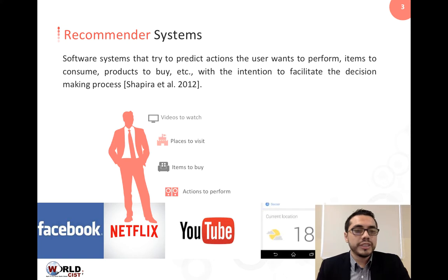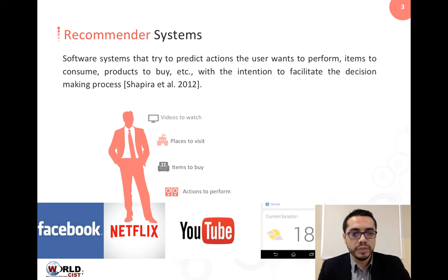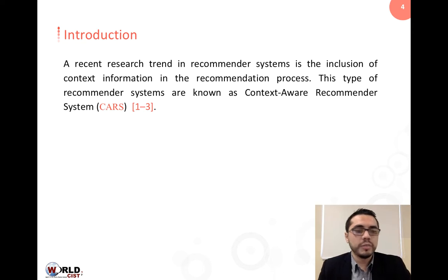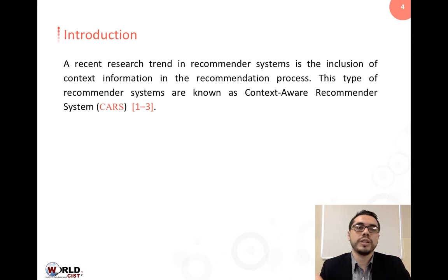Recommender systems are software systems that try to predict the actions the user wants to perform — items to consume, products to buy, and so on — with the intention to facilitate the decision-making process of the user. A current research trend is the inclusion of context information into the recommendation process. This new type of recommender systems are known as context-aware recommender systems, or CARS.